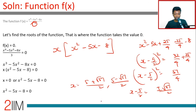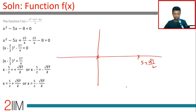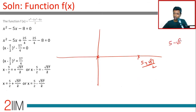Let me draw these three roots on the number line: 0, (5 + √57)/2, and (5 − √57)/2. The midpoint is 5/2. Since √57 is more than 7 but less than 8, (5 − √57)/2 will be a negative number, sitting somewhere to the left of zero.